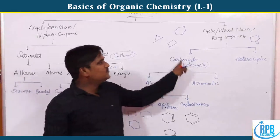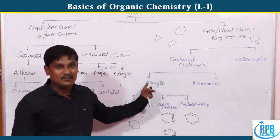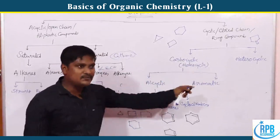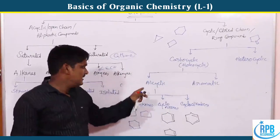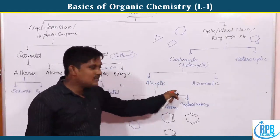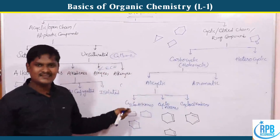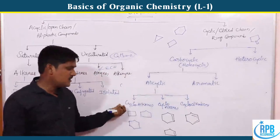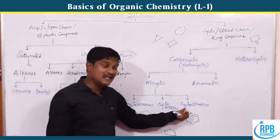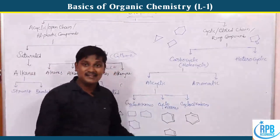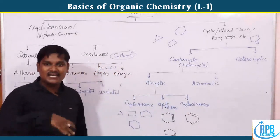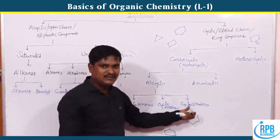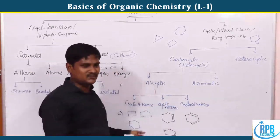To summarize ring compounds: they divide into carbocyclic and heterocyclic. Carbocyclic is of two types — alicyclic and aromatic. Alicyclic includes cycloalkanes, cycloalkenes, cycloalkadienes, and cycloalkenines, which we will discuss further.